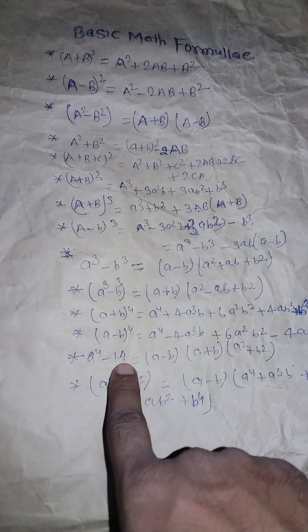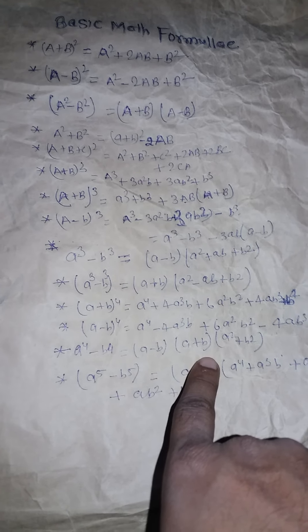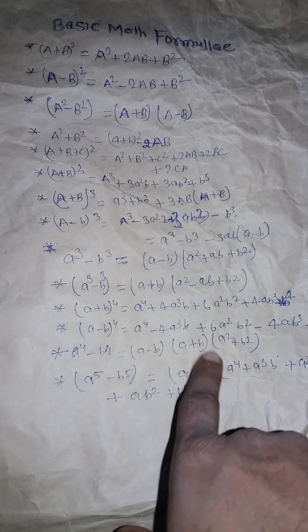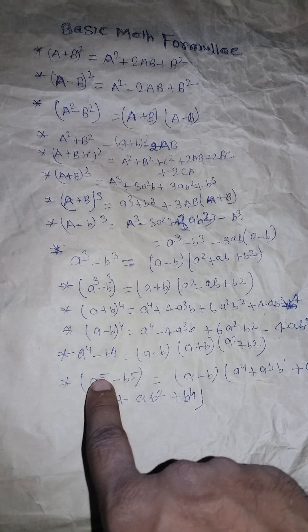Next one: a power 4 minus b power 4 is equal to a minus b into a plus b into a square plus b square.